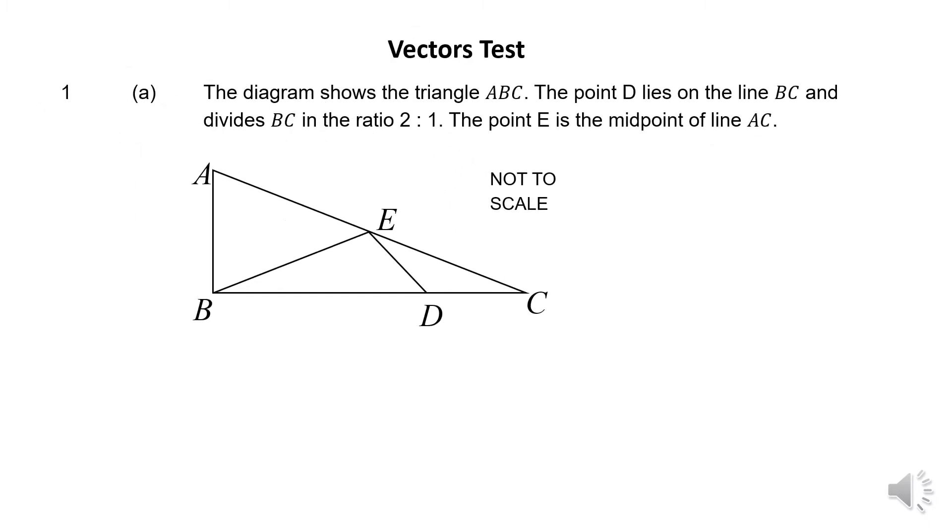This question says that the diagram shows triangle ABC. The point D lies on the line BC and divides this line BC in the ratio 2 is to 1, and point E is the midpoint of line AC. Therefore, if we are given that BA equals vector a and BC equals vector b, we know that BD is two-thirds of that 2 is to 1 ratio. Therefore, DC will be one part of the three.